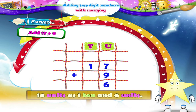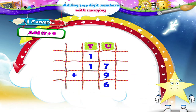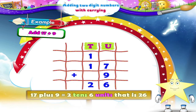One ten is carried over to the tens column. Now we get one ten plus one ten is equal to two tens. Therefore, seventeen plus nine equals two tens, six units — that is twenty-six.